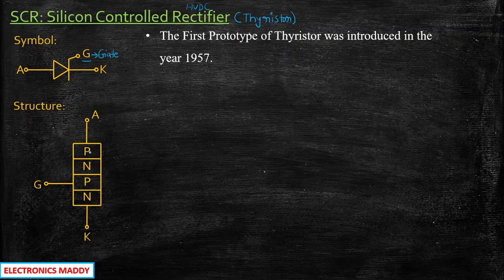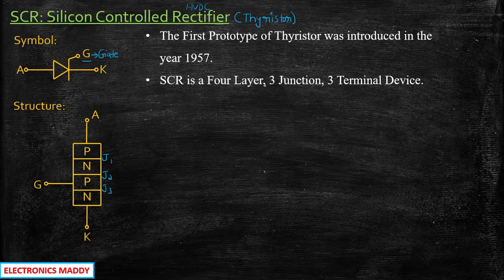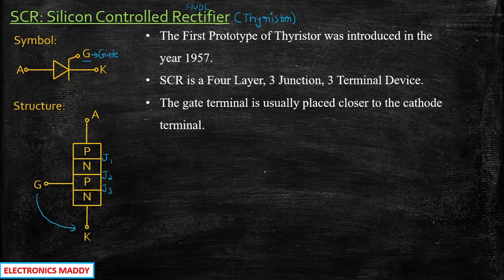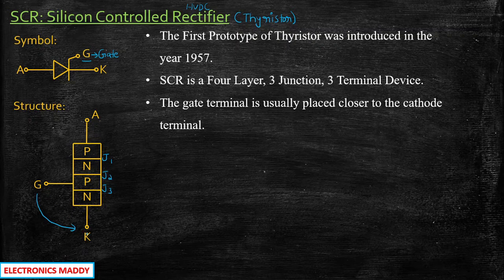The SCR contains four layers alternatively stacked together in the fashion PNPN, and it contains three junctions J1, J2, and J3. So as a conclusion, SCR is a four-layer, three-junction, three-terminal device. The gate terminal is usually placed closer to the cathode — there is a specific reason for this: you don't want the length of the wire to be very long when giving supply, so the structure is arranged such that the gate terminal is closer to the cathode terminal.